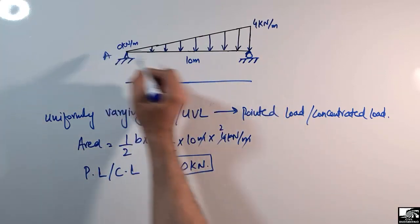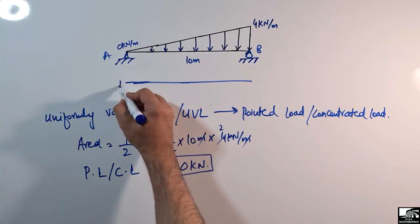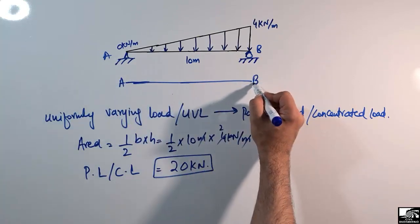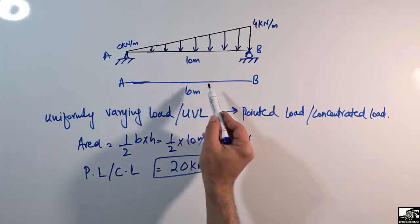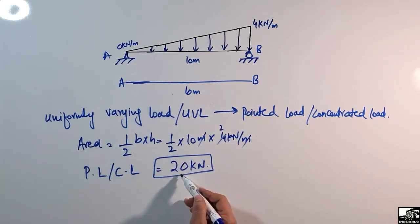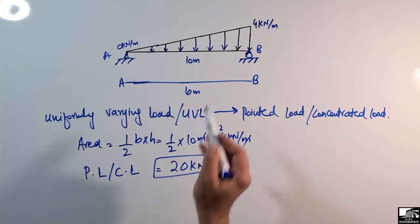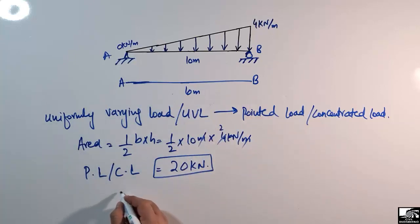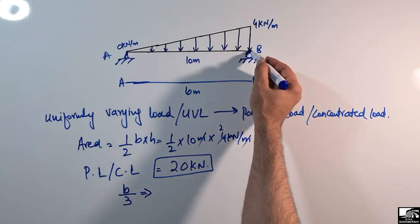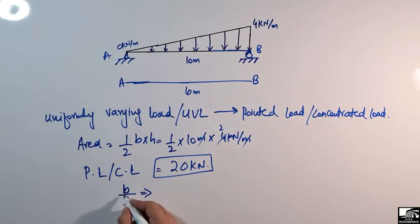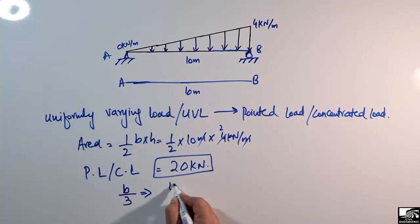Now, where does this 20 kN load act on the beam? Looking at the free body diagram of the beam with support A and support B, and a total length of 10 meters — the concentrated load acts at a distance of b/3 from the right end, where b is the base. So b/3 equals 10 divided by 3.